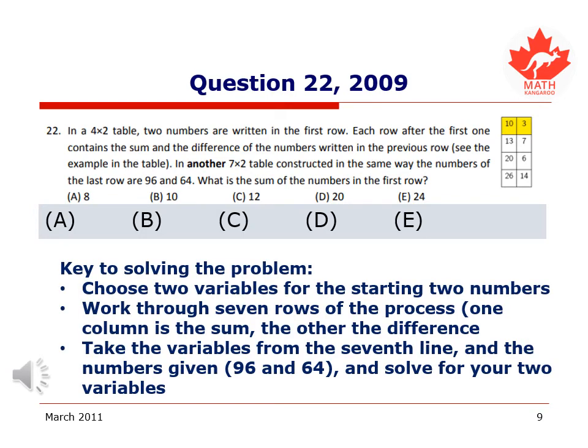The key to solving this problem is to choose two variables for the starting two numbers, and then basically we're going to work through seven rows of this process. One column is the sum, the other is the difference. Basically just rewriting these variables until finally we get to seven rows of this process, and we take the variables from the seventh line and the numbers given, 96 and 64, which are supposed to be the sum and difference of that row, and solve for the two variables.